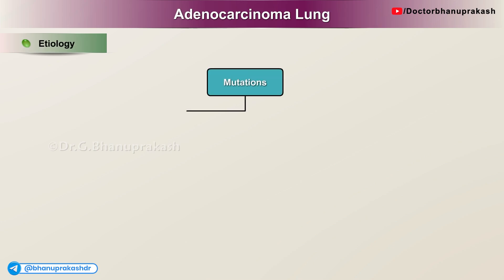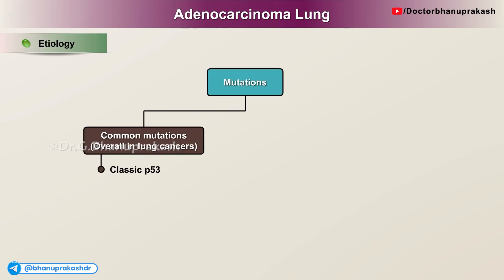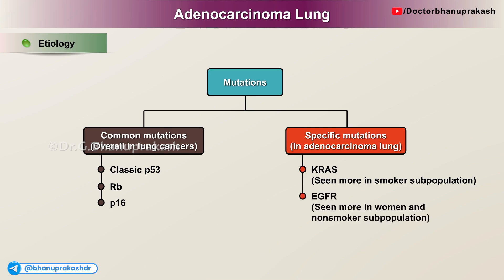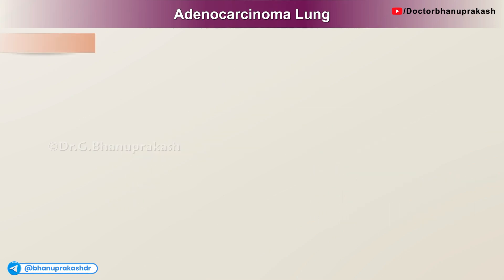Etiology: Aside from the classic P53, RB, and P16 mutations seen in almost all types of lung carcinomas, two genes of interest are commonly mutated in lung adenocarcinoma: KRAS, seen more commonly in the smoker patient subpopulation, and EGFR, seen more in the women and non-smoker patient subpopulation.